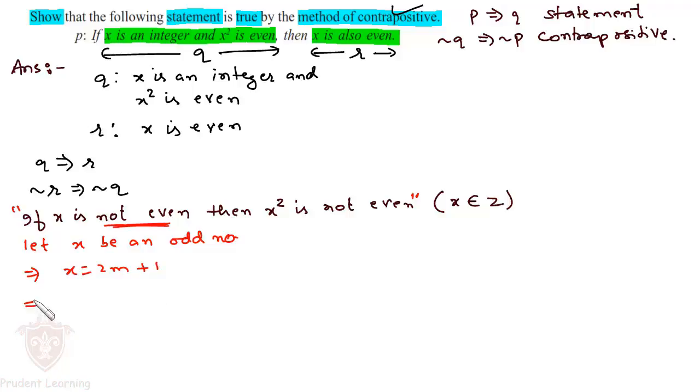Now, on squaring both sides of the equation, we have x² = 4m² + 4m + 1.